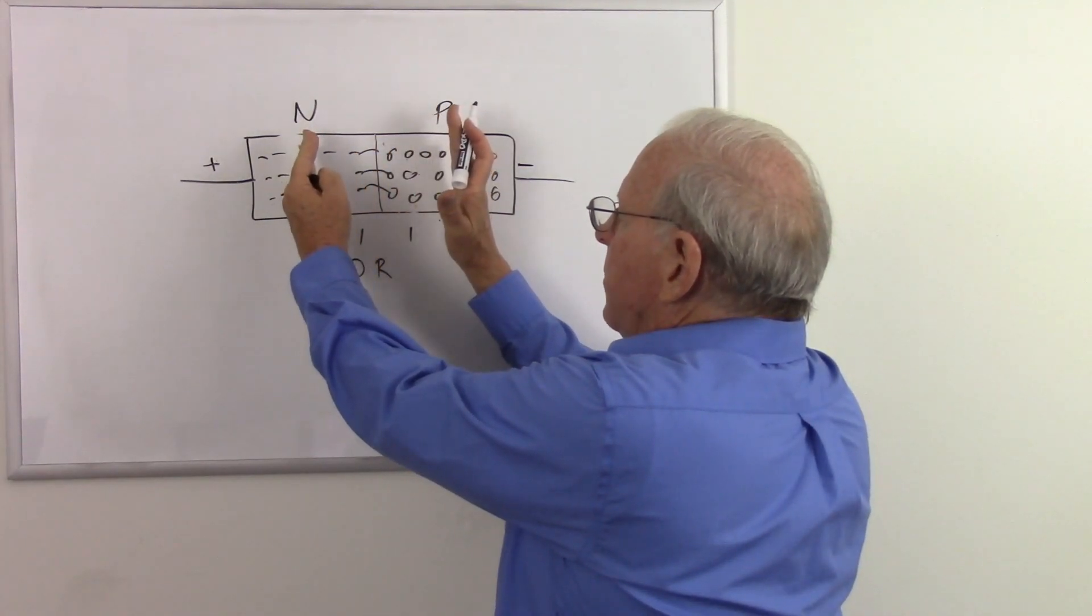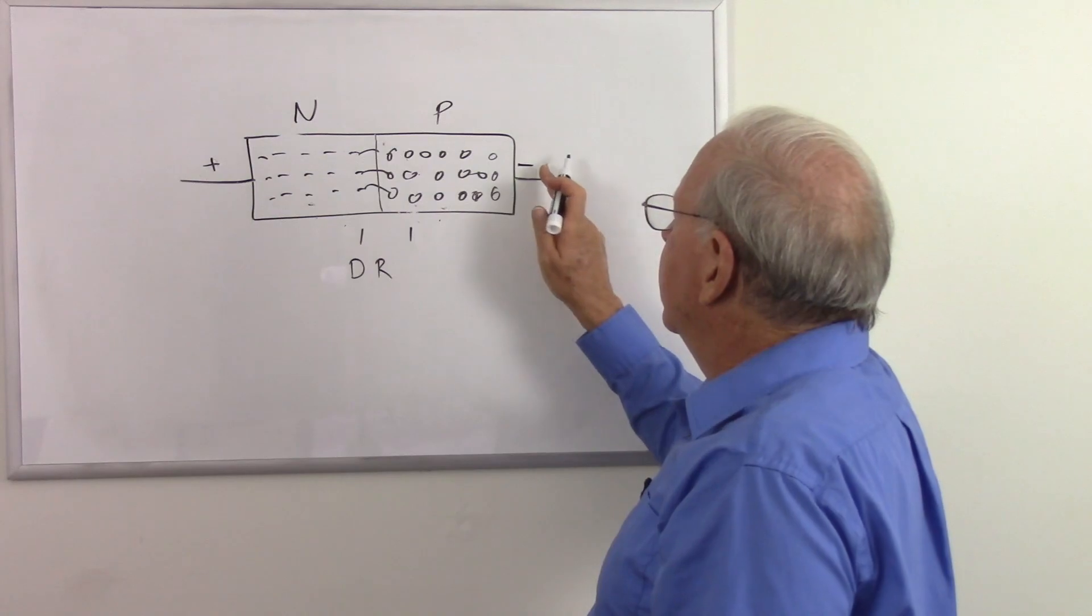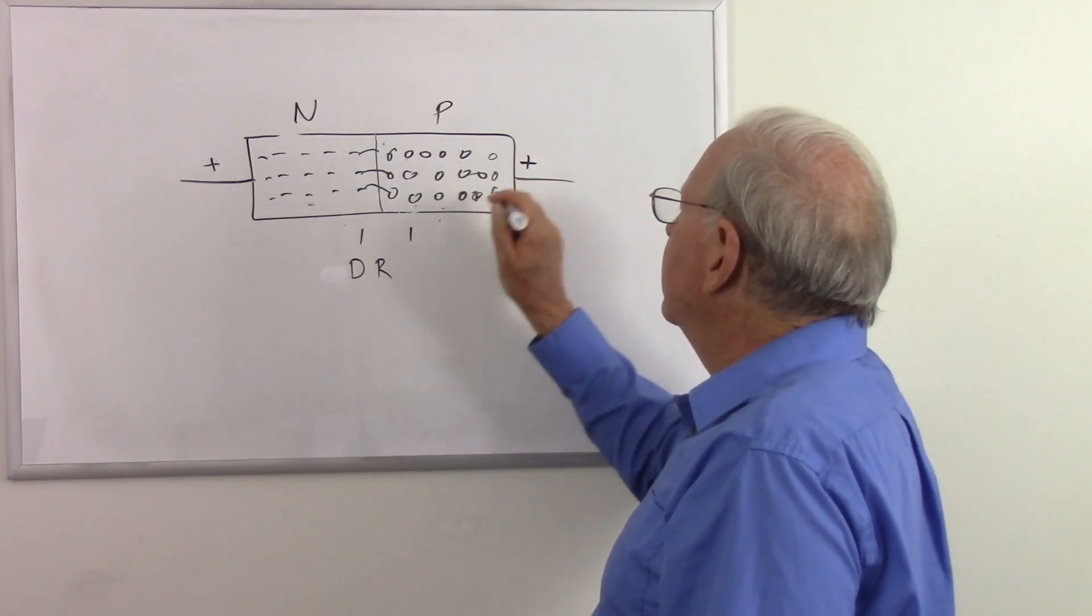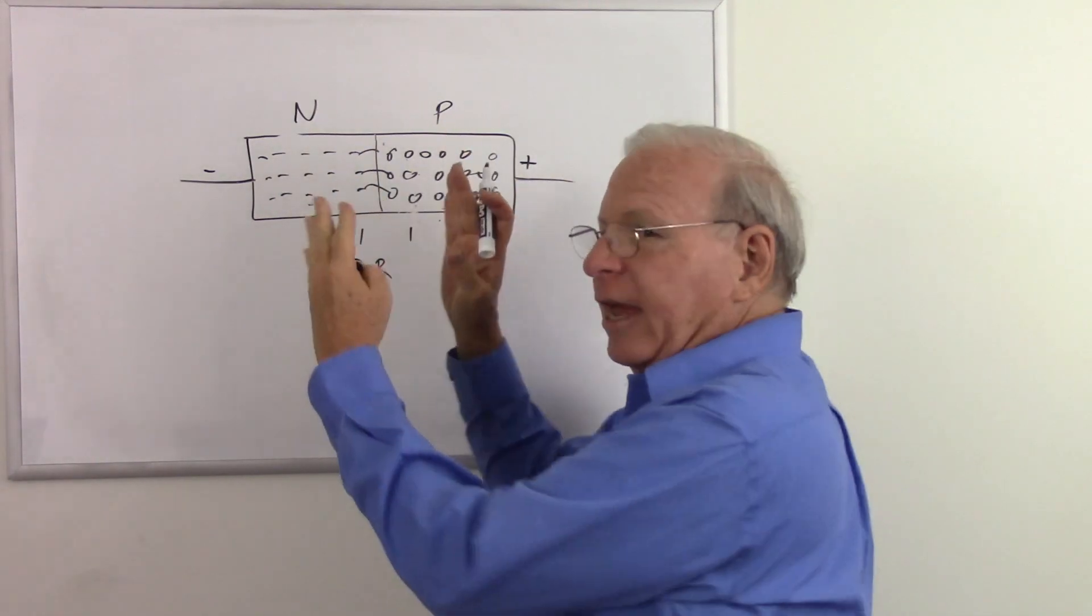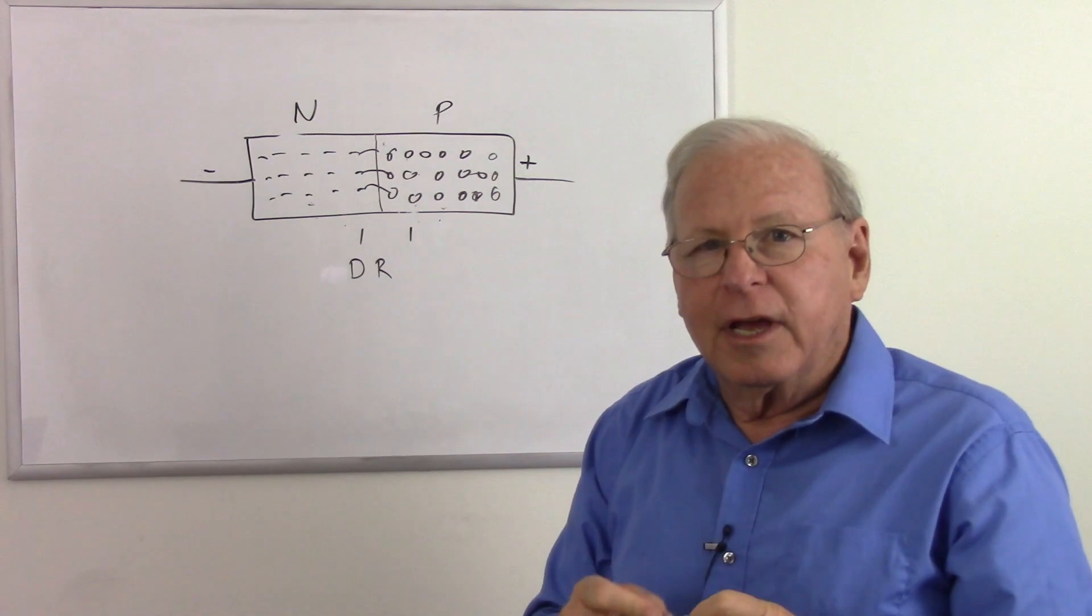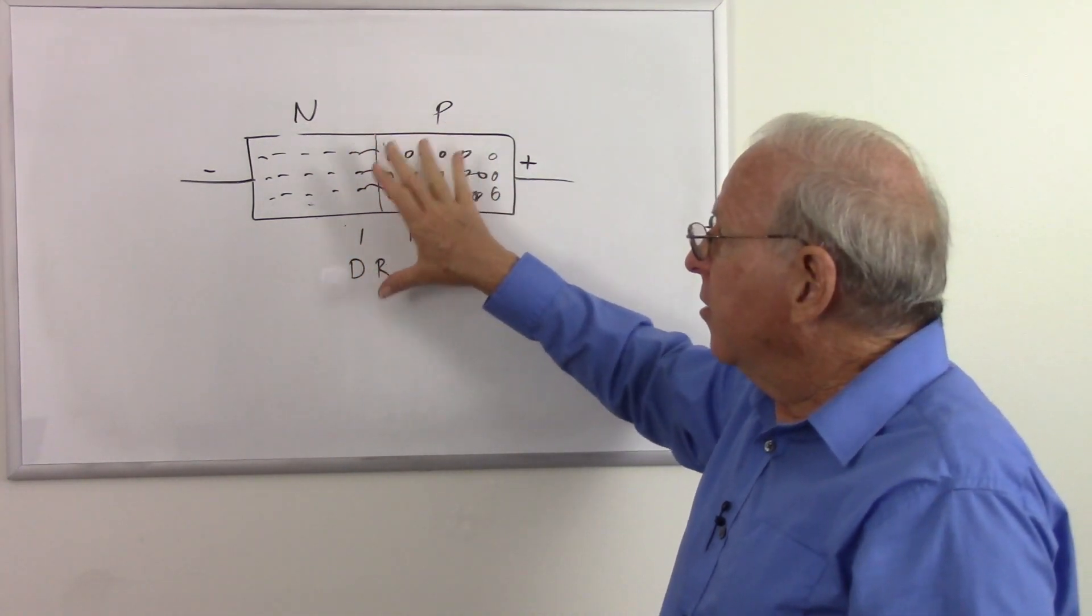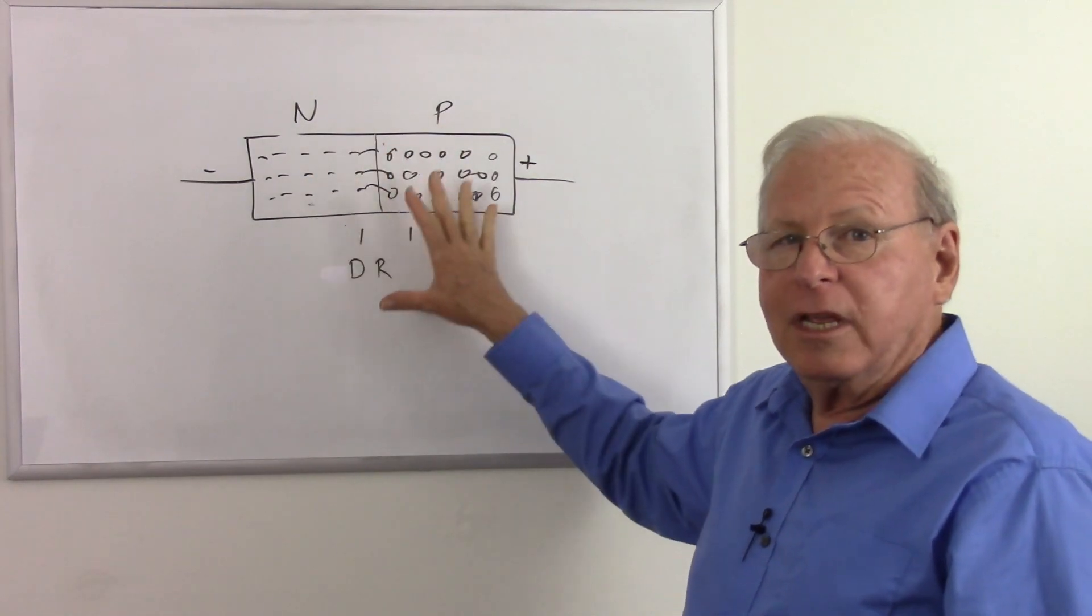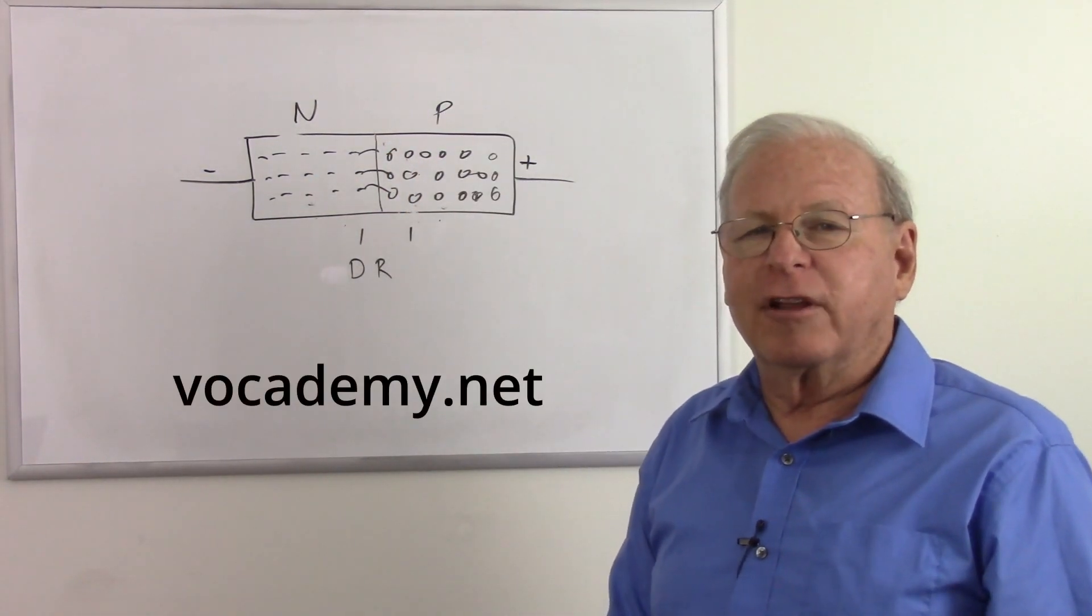But then when we put positive on the p, negative on the n, it pushes them together and it begins to conduct. The more we put there, it's even more conductive. Went into more details in the lecture about diodes, about the characteristics, but this is the basic part we need to know and review to start talking about bipolar junction transistors.